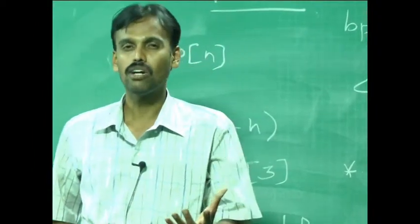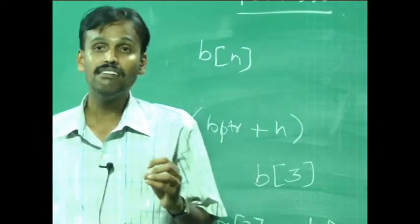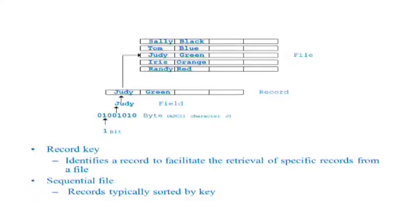We need to know something about a record key. What is a record key? It identifies a record to facilitate the retrieval of specific records from a particular file. What is a sequential file? Records typically in a sequential file are sorted by a particular key.